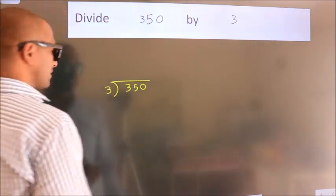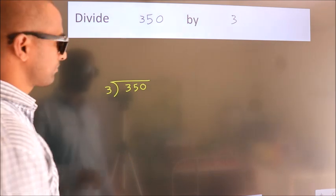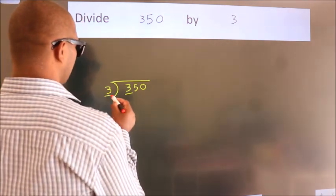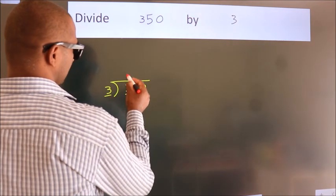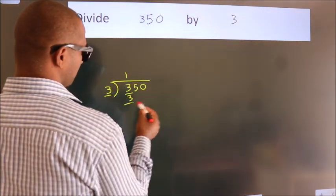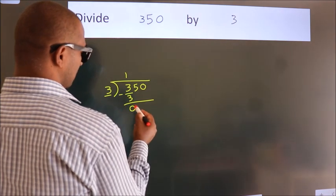This is your step 1. Next, here we have 3, here 3. When do we get 3? In 3 table, 3 once, 3. Now, we should subtract, we get 0.